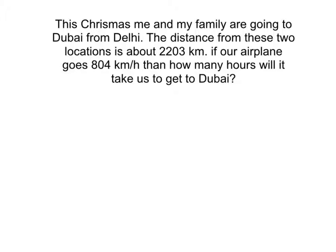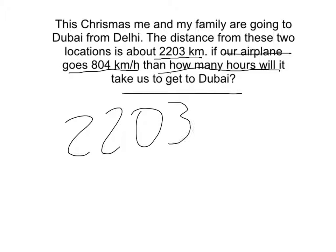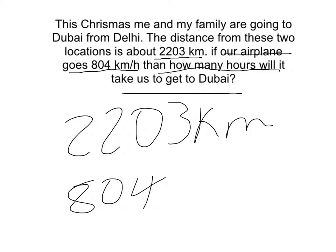Let's take some time to make sense of this problem right now and see what it's asking us. So the distance is 2,203 kilometers. Our airplane goes 804 kilometers per hour. Then how many hours will it take us to get to Dubai? Here's our total distance, and here's our speed, 804 kilometers per hour. So the distance is 2,203 kilometers, and every hour we're going to go 804 kilometers.